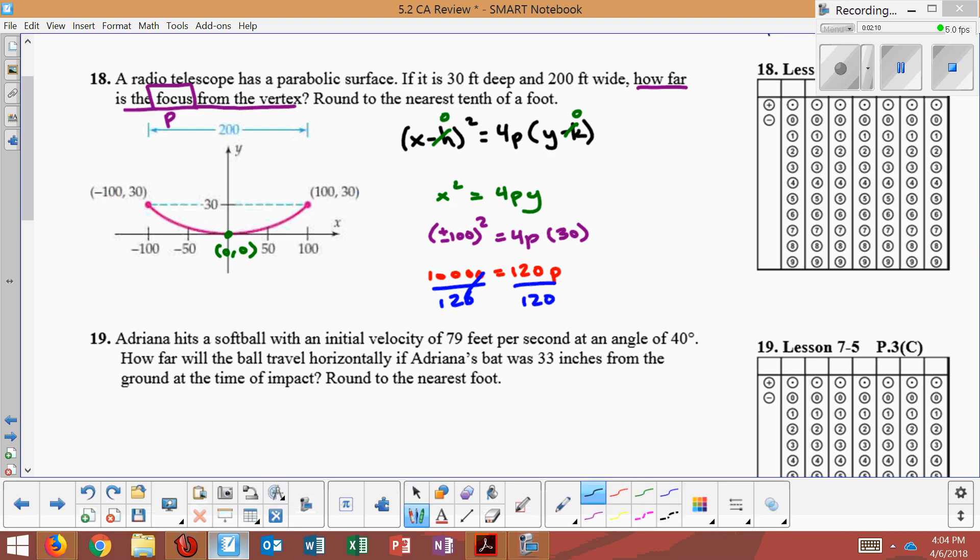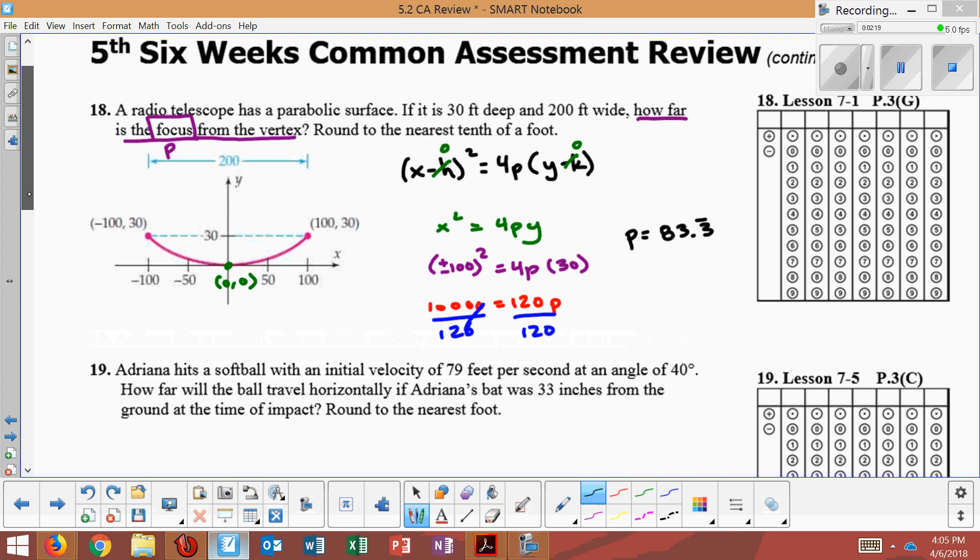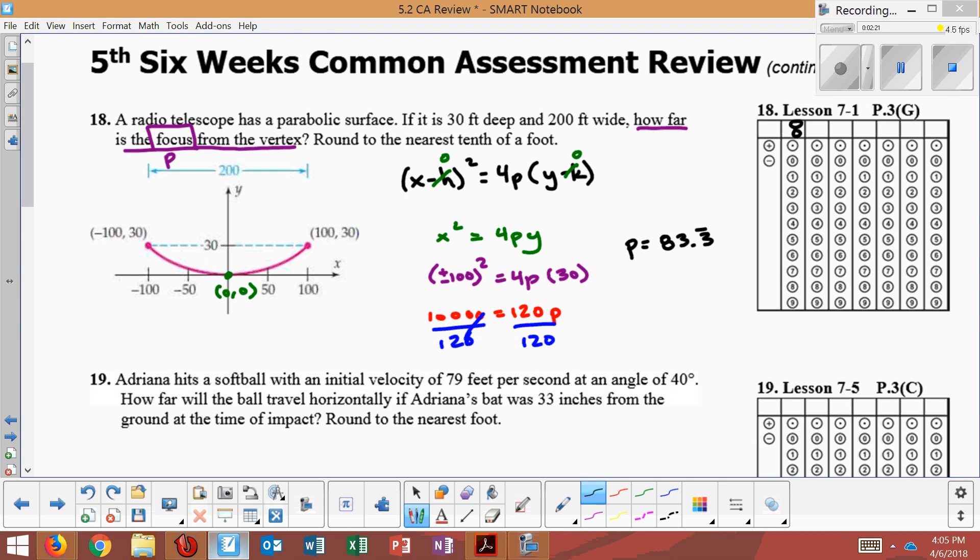This says round to the nearest tenth of a foot. So P, since it actually equals 83.3 repeating, we're going to just say our answer will be 83.3. So this is how our value would look, 83.3.